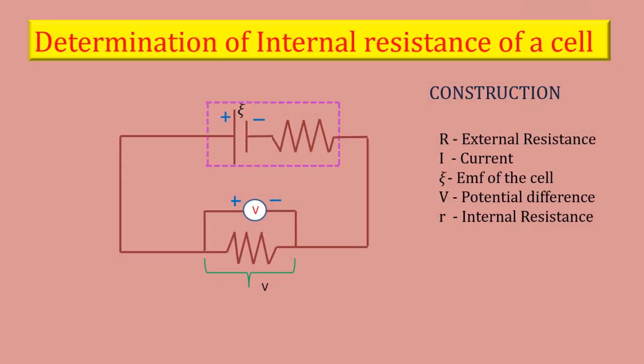Then, an external resistance R is connected to the circuit. Current I is established in the circuit.